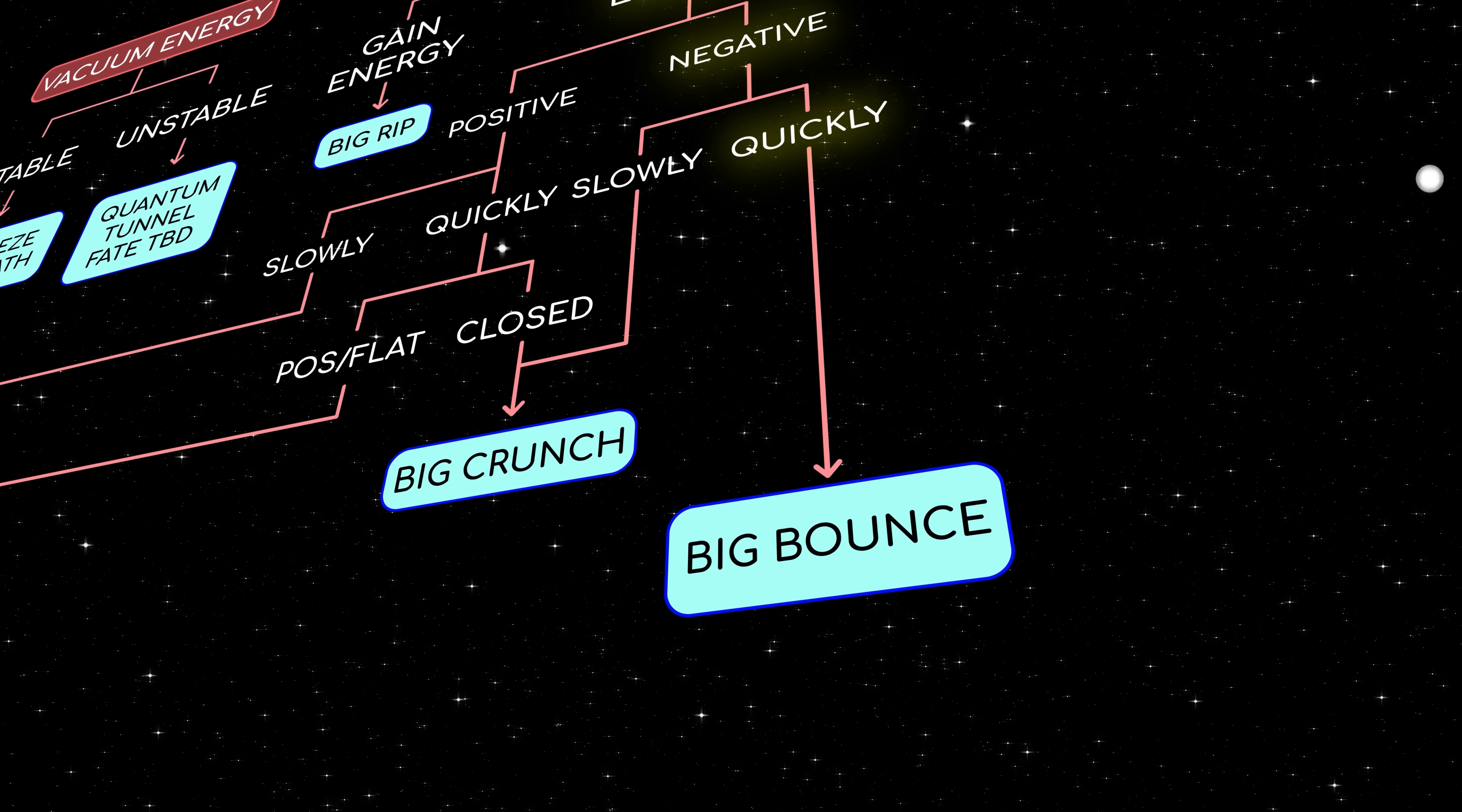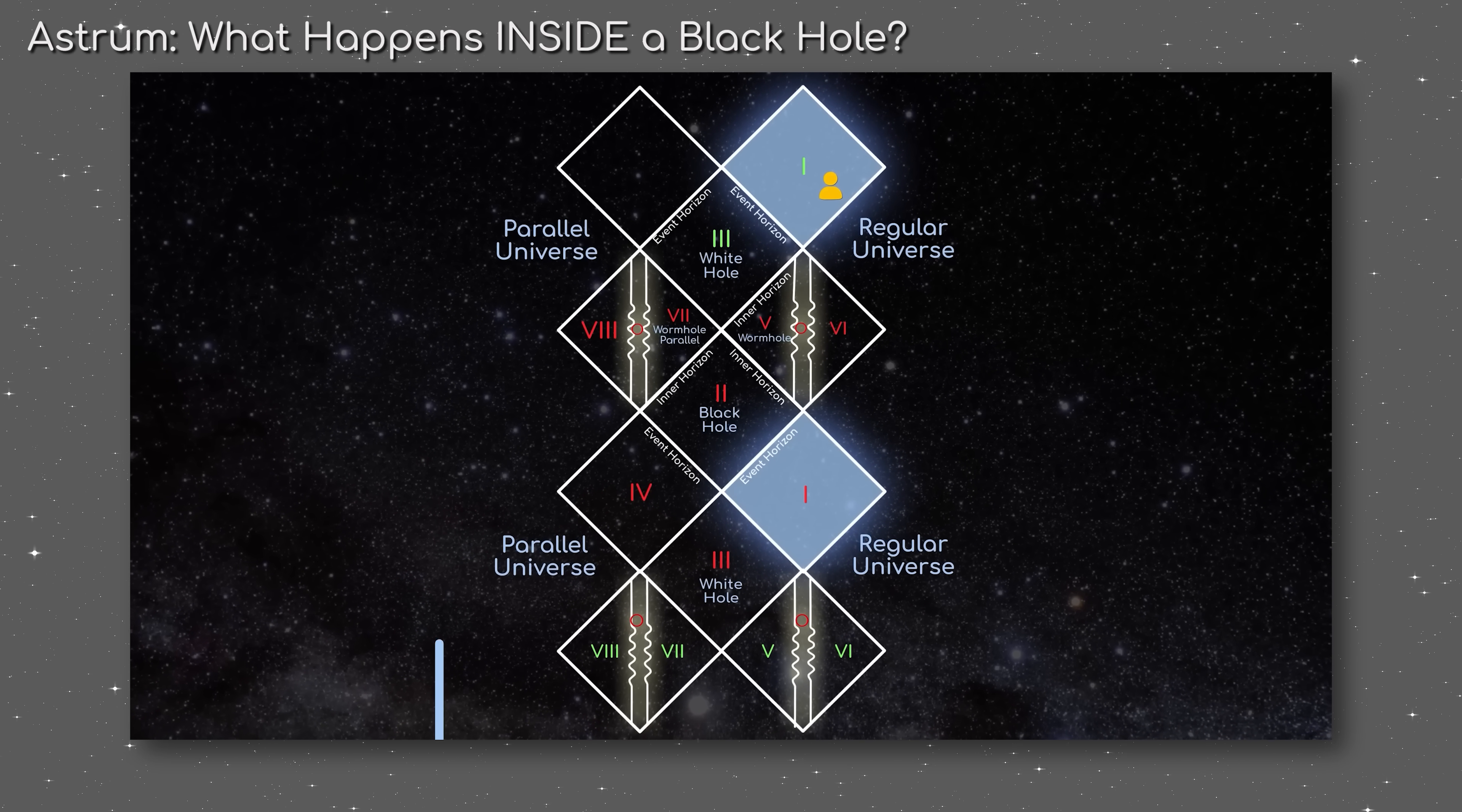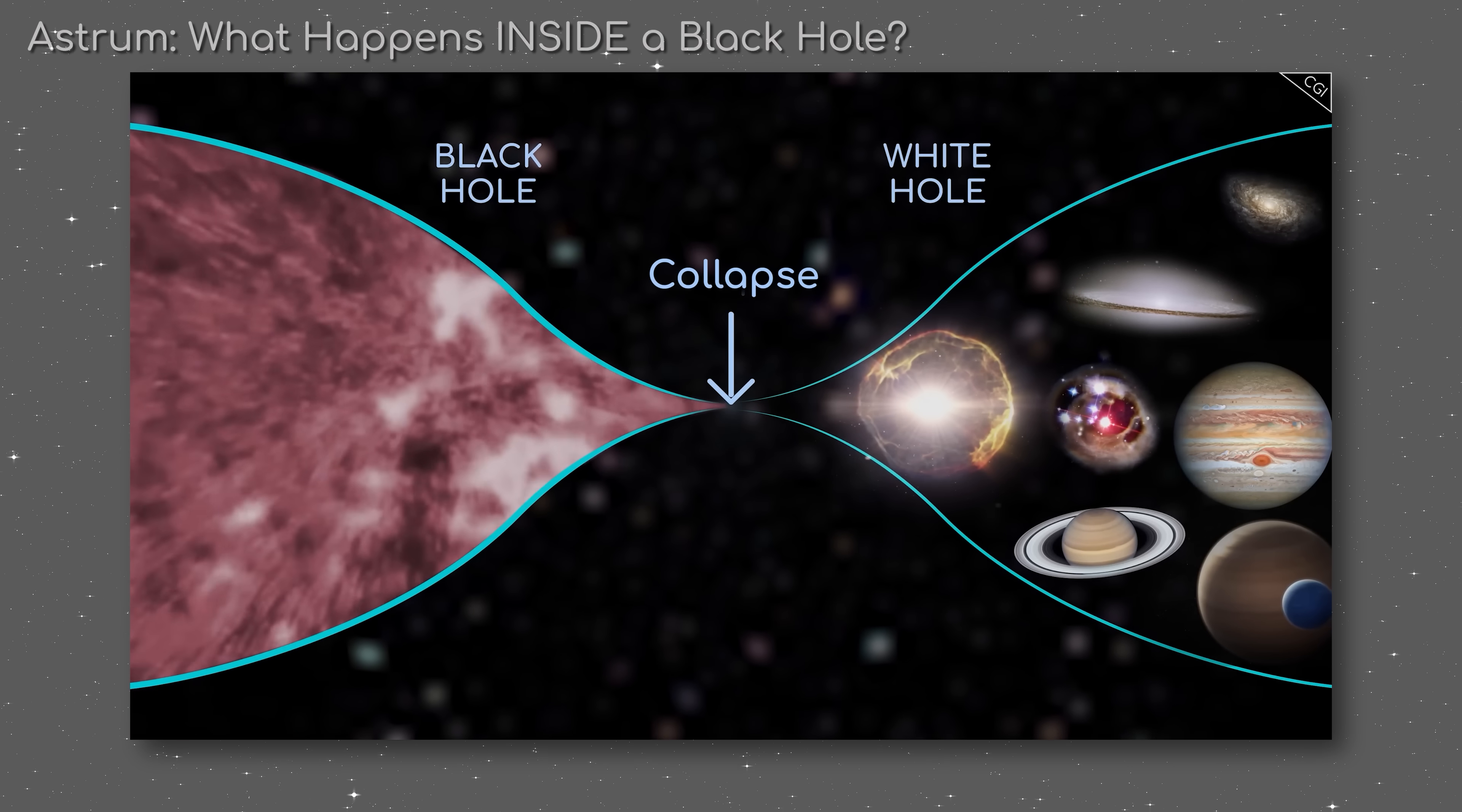In fact, the universe could go through a big bounce following a big crunch too. These scenarios open the door to a new type of cyclic universe, entirely different from Penrose's idea, which we've discussed in a previous video, in which the universe goes through an infinite sequence of expansion, cooling, contraction, and reheating over and over again. In this picture, even our Big Bang 14 billion years ago could have actually been a big bounce, connecting our own cycle of the universe to all those that came before it.